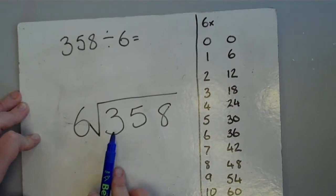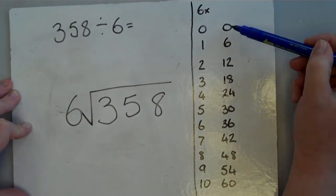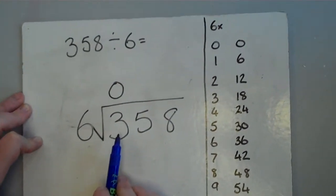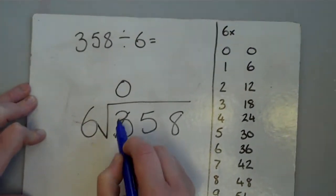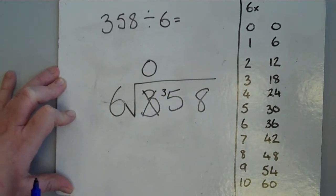Number 6, how many times can that fit into 3? Looking down my table, it doesn't fit into 3 any times, it's too big. So it fits in no times, but I've still got that 3 left over. I'm going to cross out that 3 and as it's left over, it's remaining, I'm going to put it just here in front of the next number.